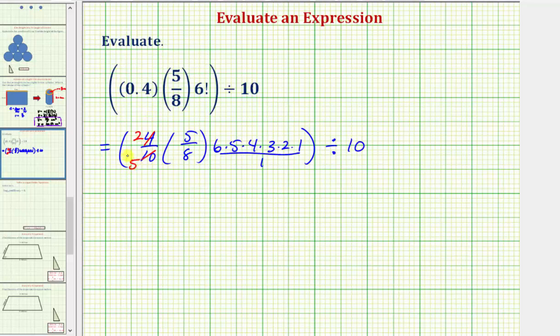Notice how we have a factor of five in the denominator here and a factor of five in the numerator here, and five divided by five simplifies to one. So this five simplifies to one, and so does this five. Next we have an eight in the denominator here. Looking at the factorial, four times two is equal to eight. So this eight would simplify to one, and so would this factor of four and this factor of two.